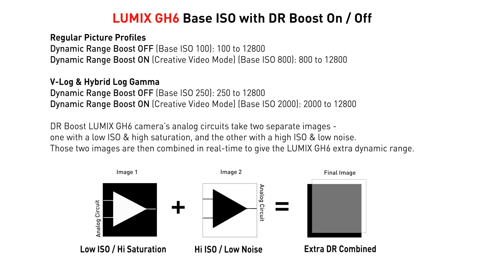So how does it work? Dynamic Range Boost combines two constant ISO gain recordings — high and low — into one single output, providing great-looking images with high saturation, high ISO, and low noise. This helps you protect your highlights while retaining your mid-range, mid-tones, and of course your shadows.